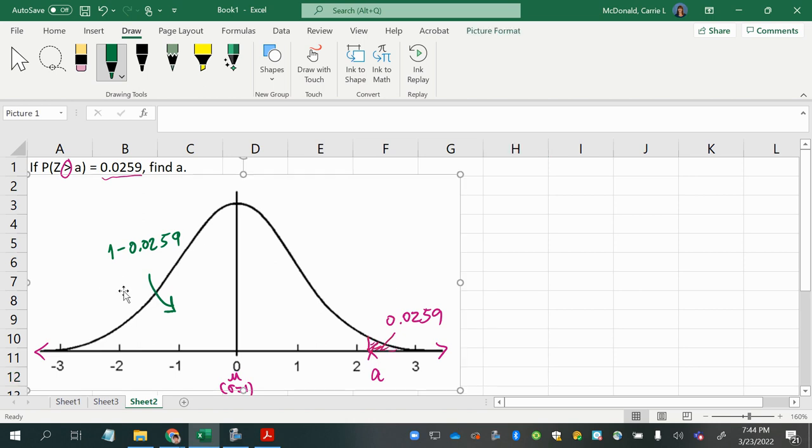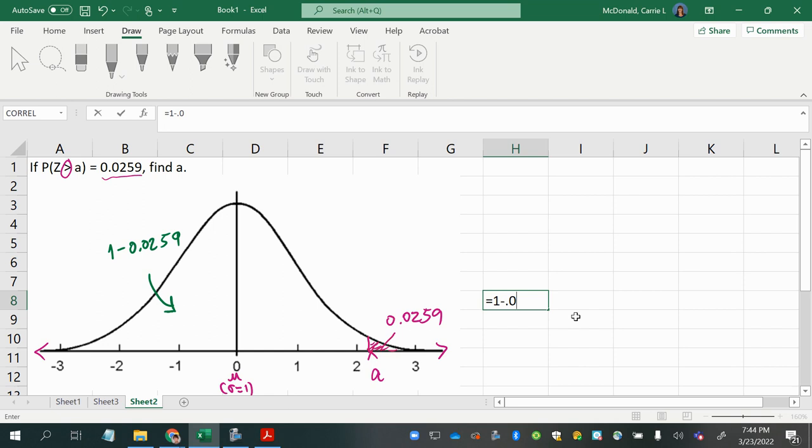So that will equal 1 minus 0.0259 will be 0.9741. So that's this area here. That's my left area.